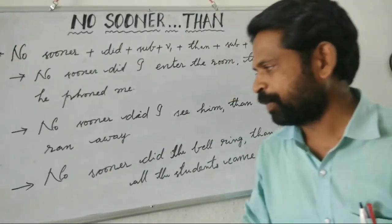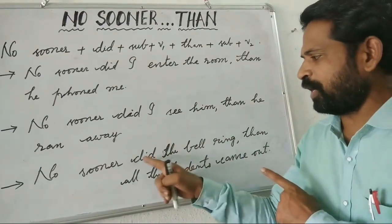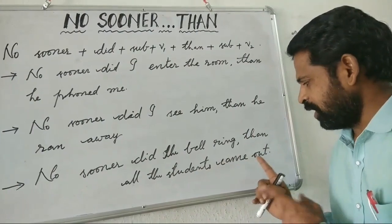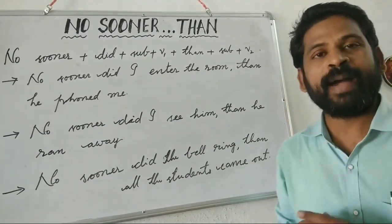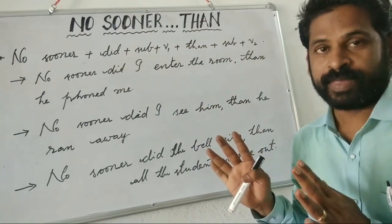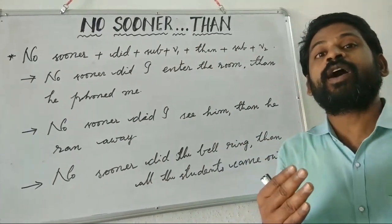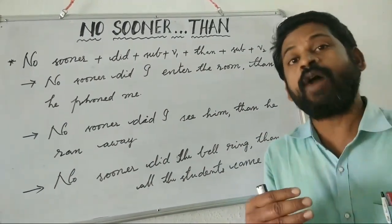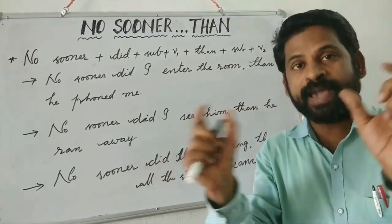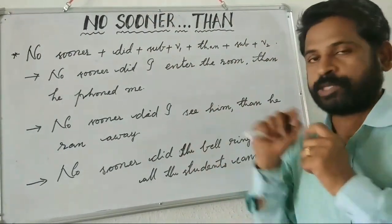Another example: no sooner did the bell ring — bell mogindo ledo, using 'did' and V1 — then all the students came out. So using the 'no sooner than' structure, you can express easily and properly what you want to express in Telugu — combining two actions together.